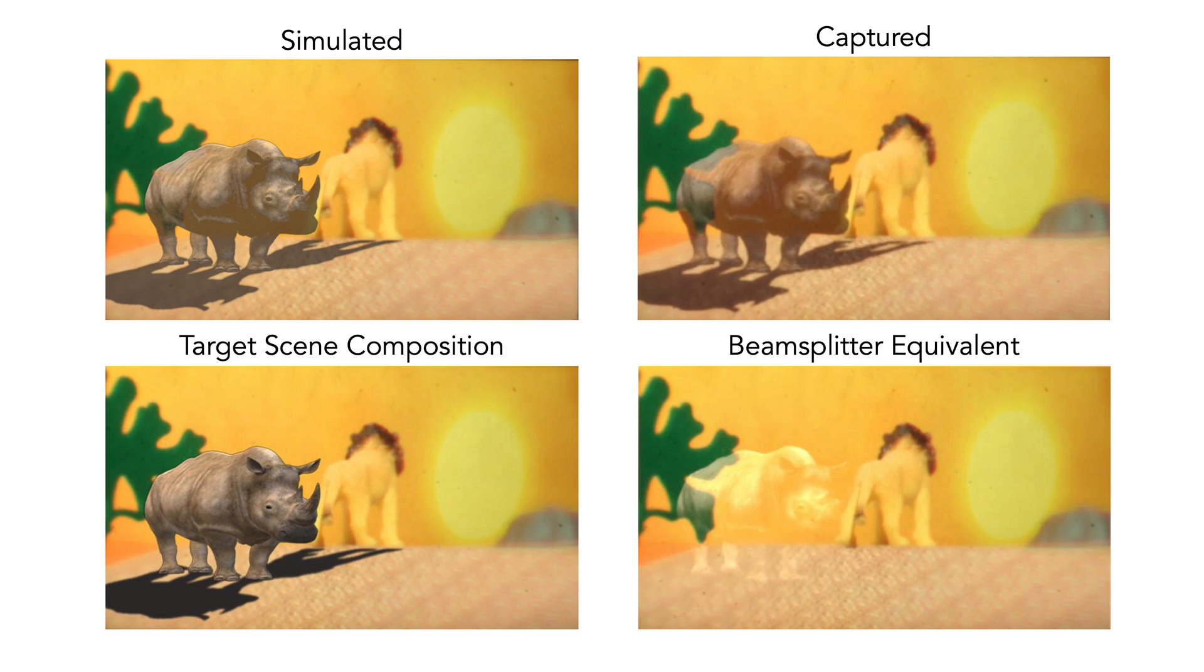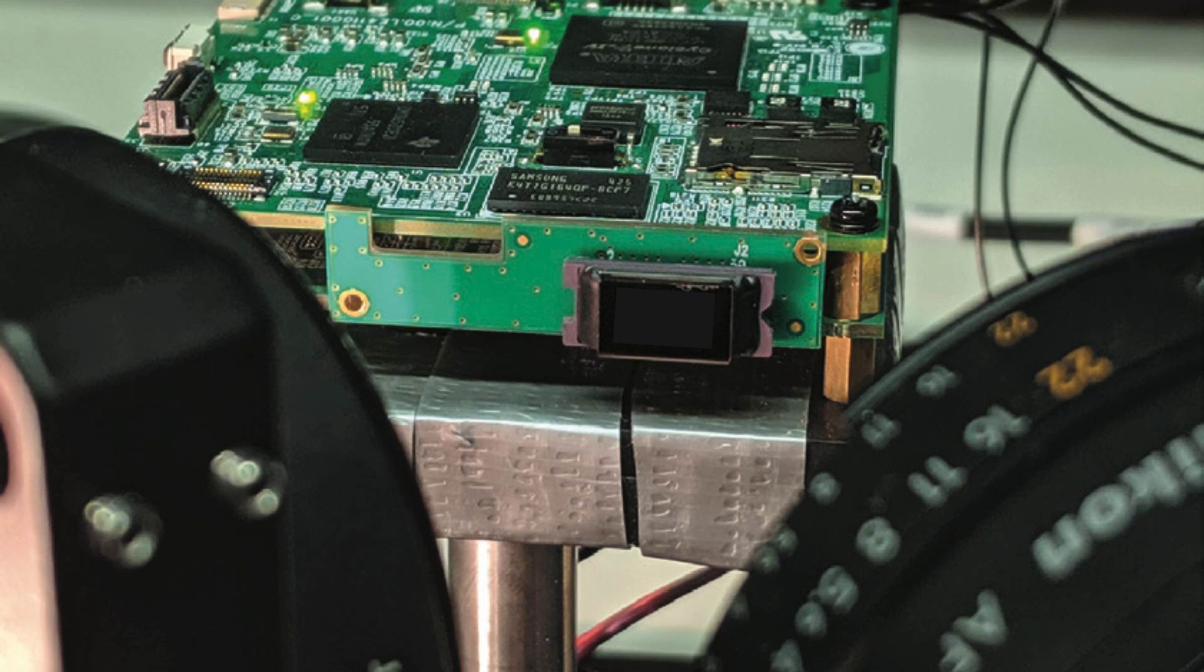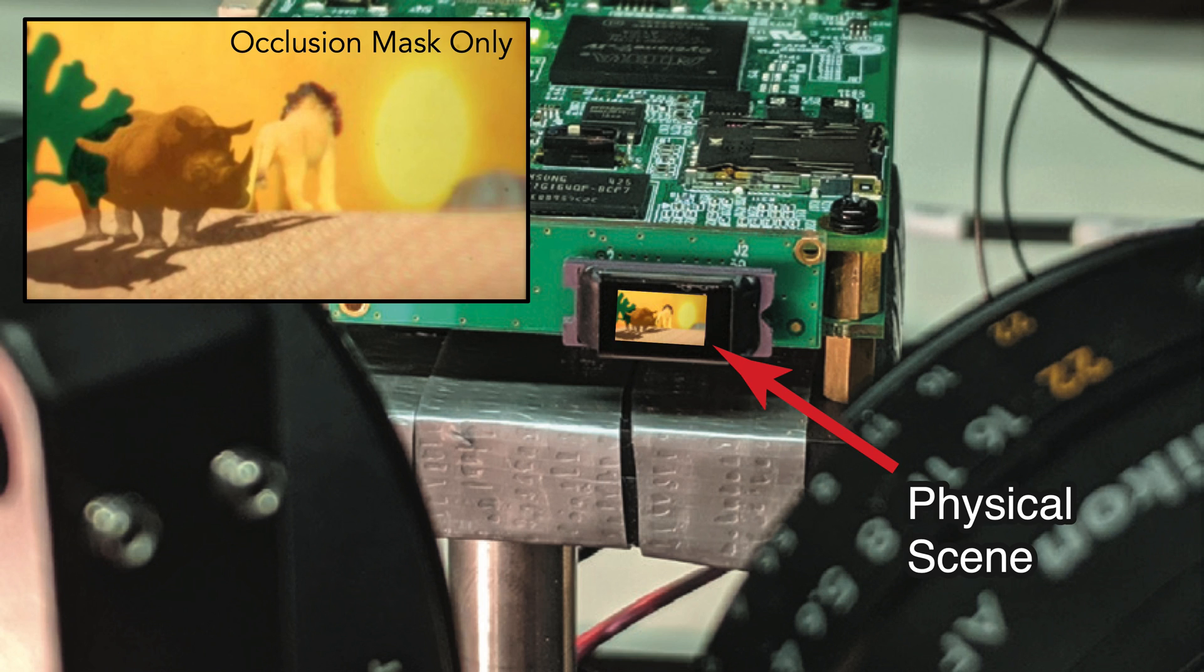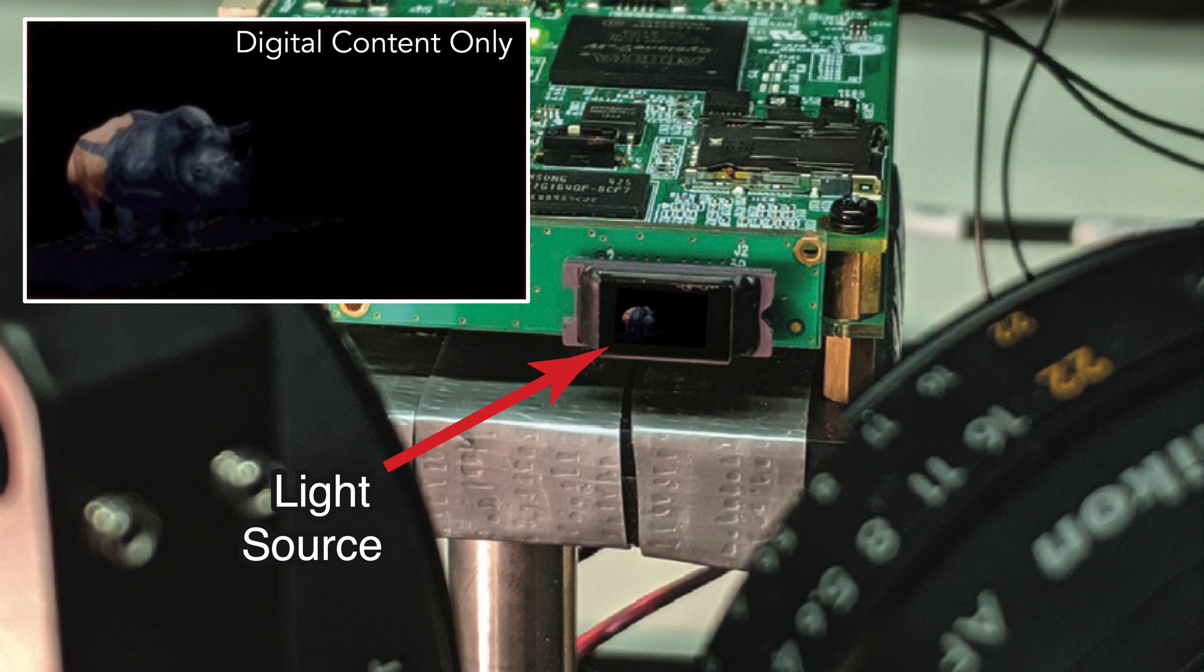But the nice thing about our setup is that we can really see the approach in action. So we can separate out each light path. So if I was to cover the LED and just let in light from the physical scene, we can just see the occlusion mask. Note that unlike previous occlusion techniques that use a second SLM, light is not actually fully blocked within the rhino shape. This is because some of the yellow in the scene is actually used to reconstruct the rhino image, as we can visualize here.